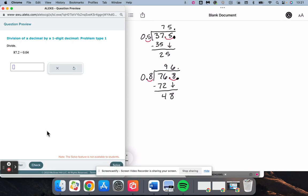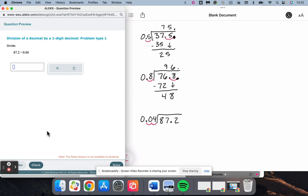Okay, we have 87.2 divided by 0.04. And so to make the number outside the division symbol a whole number, we would need to move two spots to the right. So inside, we also need to move two spots to the right, and we're going to fill that empty slot with a 0.